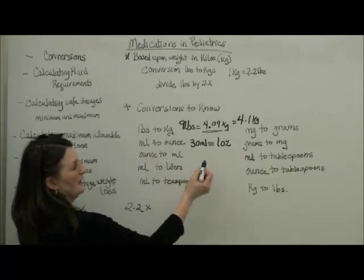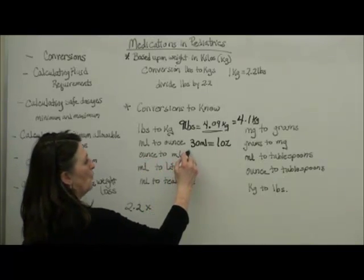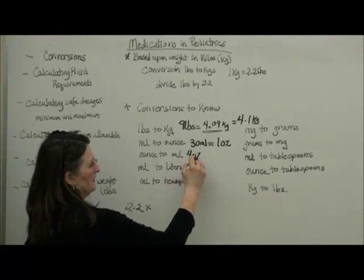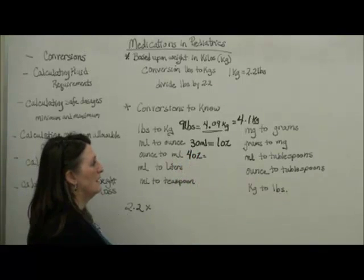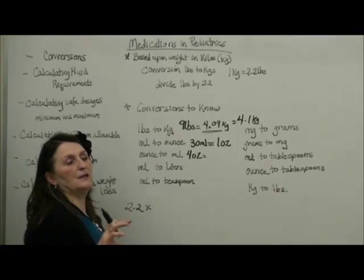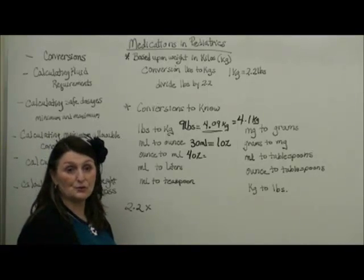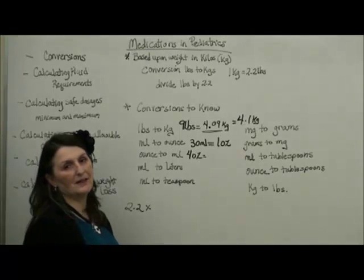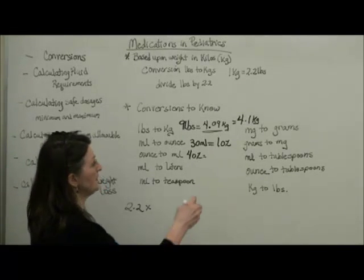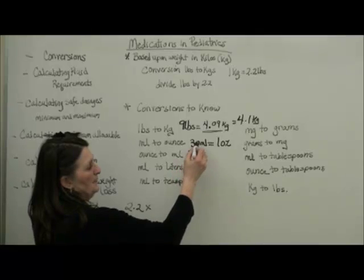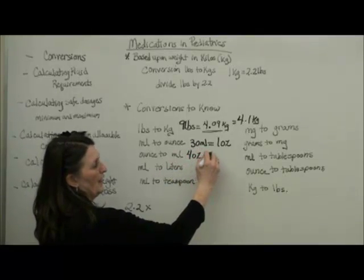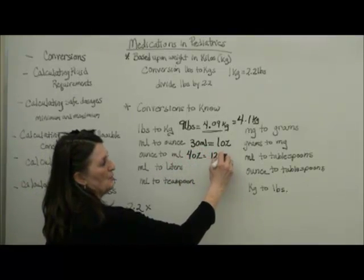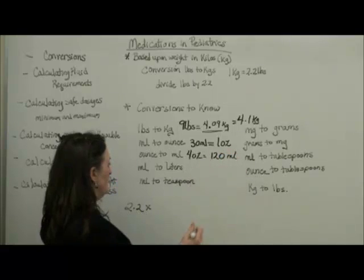So remember that we have 30 milliliters is one ounce. Ounces to milliliters. Let's say I have four ounces. The patient drank a four ounce glass of juice. We need to enter that in our electronic medical record in milliliters. Four times 30, so four ounces, is equal to 120 milliliters.